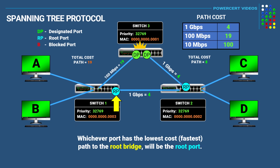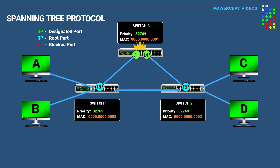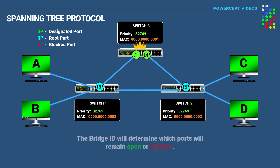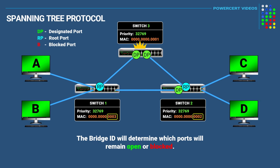Putting these links back to 100 megabits each, now that we have our root ports figured out, it's time to determine which of the last two remaining ports will be blocked to prevent broadcast loops. The way to determine which port remains open and which is blocked is again based on the switch's bridge ID. Since the lower bridge ID wins, the port on switch 2 will remain open and be labeled a designated port, while the port on switch 1, having a higher bridge ID, will be blocked — shutting down that link and preventing broadcast loops.